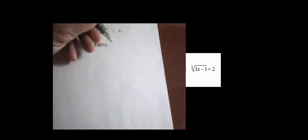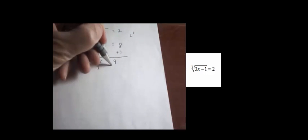Problem 17: solve the radical equation. Get rid of the radical by cubing both sides. Cubing the left side removes the radical symbol, giving 3x - 1. Cubing the right side: 2³ = 8. Using algebra to solve: add 1 to both sides, 3x = 9. Divide both sides by 3, and x = 3.